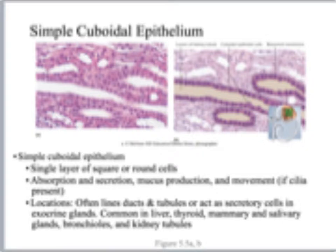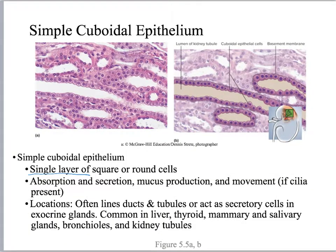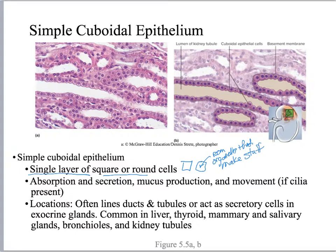Now we're going to move on to simple cuboidal. Single layer of cells and they're going to be square to roundish — mostly square or cube-shaped. Whenever you've got something with a lot of room in it, that means it's got room for the organelles that make stuff. Simple squamous can do diffusion of fluids, like serous fluid, but it's not got the room to make a lot of proteins, lipids, or hormones — it's too flat. But with a cuboidal cell or a columnar cell, I can have a big nucleus, lots of mitochondria, lots of endoplasmic reticulum and Golgi apparati. Those are the things that are making stuff, so what this does is it makes stuff and secretes it — like mucus. It can absorb stuff, alter it, and then resecrete it.